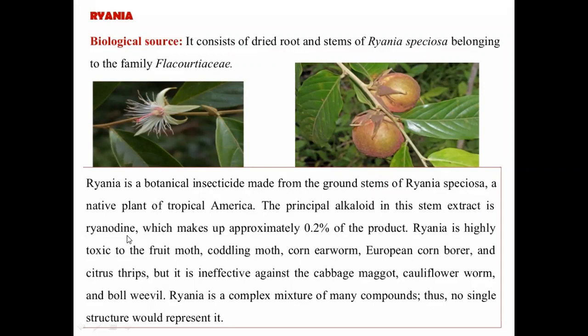Ryanodine makes up approximately 0.2% of the product. Rania is highly toxic to fruit moth, codling moth, corn earworm, European corn borer, and citrus thrips, but it is ineffective against cabbage maggot, cauliflower worm, and boll weevil.